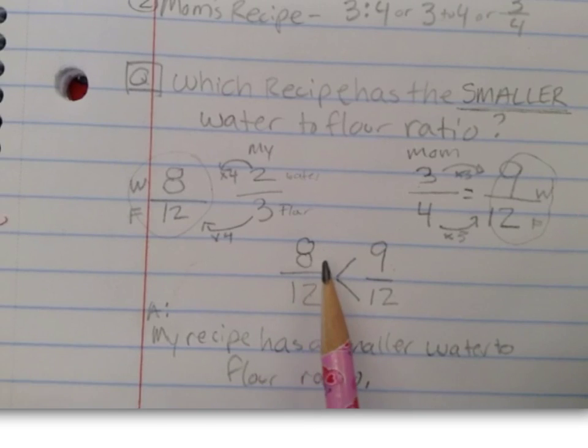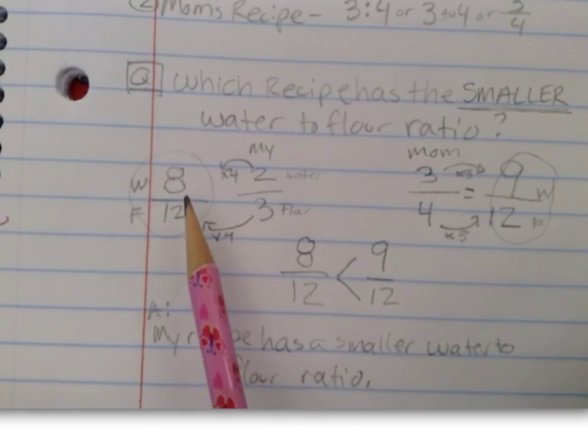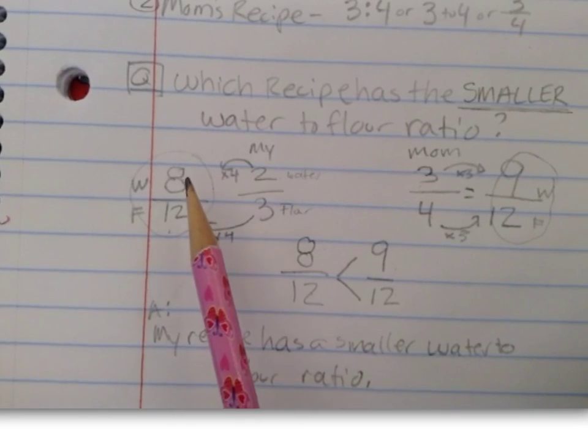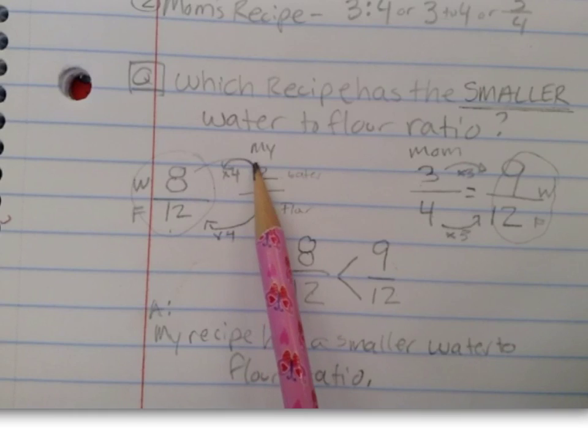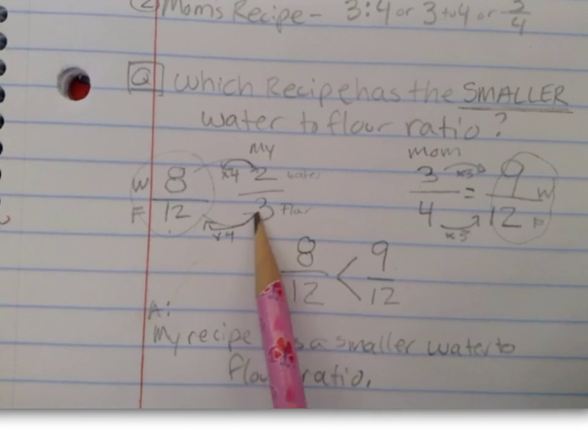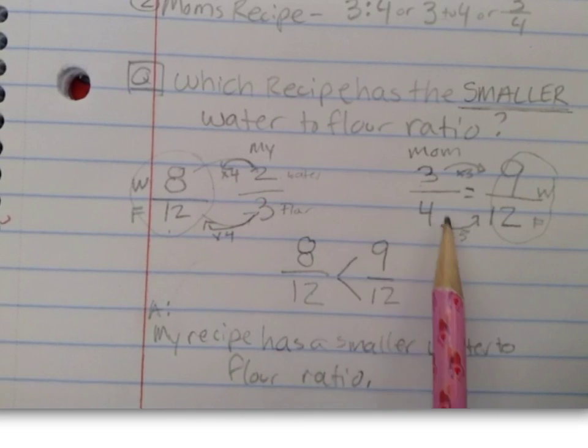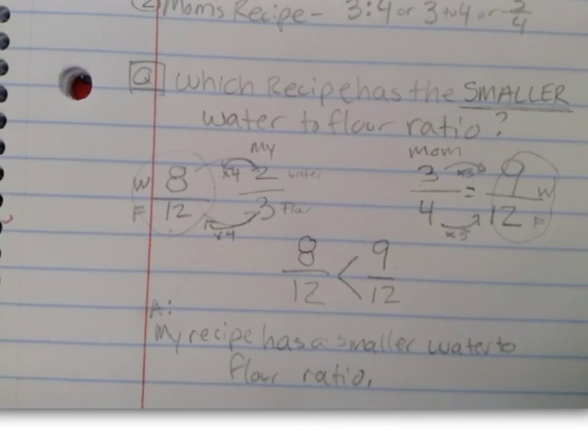I also know that I can use my equivalent fractions to simplify. So if I started out with eight cups of water for every 12 cups of flour, I can also, instead of multiplying, go backwards and divide by four in order to get my most simplified version, which is two-thirds. So I can use my understanding about fractions in order to use my ratios to compare.